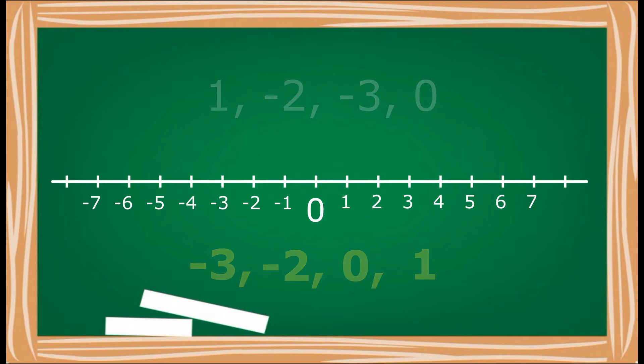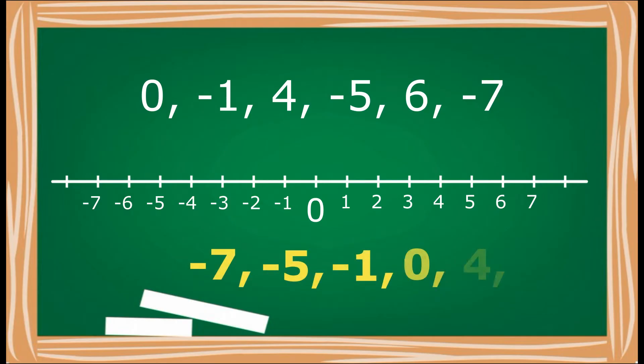Try this one, arrange the integers from lowest to highest, which comes first. Negative seven, negative five, negative one, zero, four, and six.